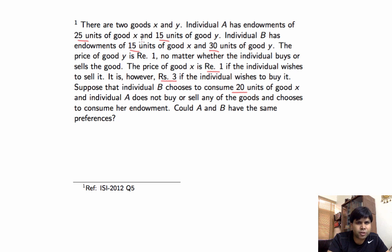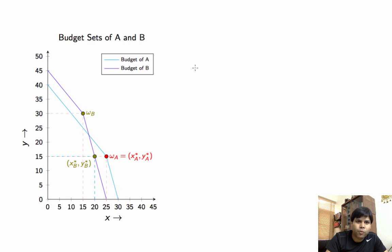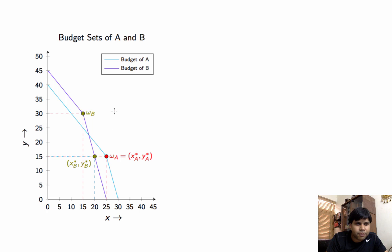We'll try to answer this question by plotting the data first. Omega A is the endowment of individual A — 25 units of X and 15 units of Y. Omega B is the endowment of individual B — 15 units of X and 30 units of Y. The price of Y is 1, the buying price of X is 3, and the selling price of X is 1.